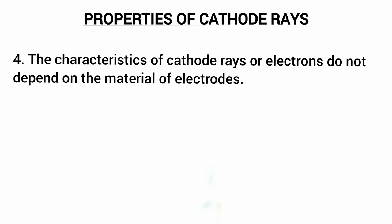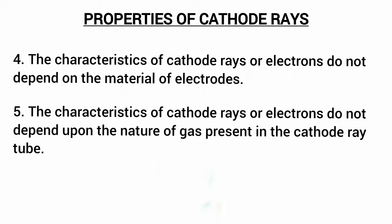The characteristics of cathode rays or electrons do not depend on the material of electrodes. Whether we use steel or metal or electrodes of any other material, the electrons will still have the same behavior. The characteristics of cathode rays also do not depend upon the nature of gas present in the cathode ray tube — their behavior will be the same whatever gas is used.